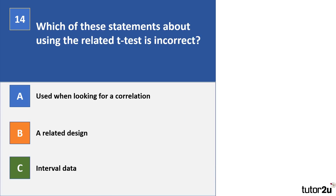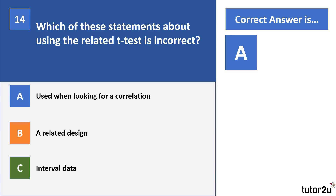Question 14. Which of these statements about using the related t-test is incorrect? A, use when looking for a correlation. B, a related design. C, interval data. The clue is in the name — the related t-test is used when you've got a repeated measures or matched pairs design. It's used with interval data and when you're looking for a difference, not a correlation. So the incorrect statement is A.